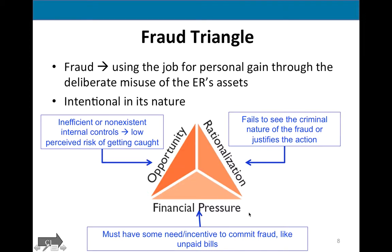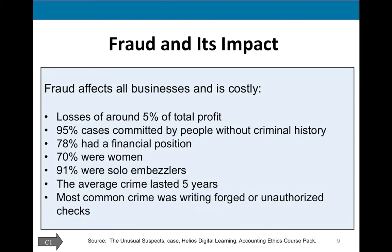An employee might also experience financial pressure — not in all cases but in most — meaning some kind of need or incentive to commit fraud, such as unpaid medical bills, divorce, a high mortgage, or drug and alcohol abuse. The third component is rationalization: the employee does not see the criminal nature of their actions, or in their mind they are justifying and explaining them without seeing the severity. Data from a case published by Helios Digital Learning notes that fraud affects all businesses, and businesses lose about 5% of total profit — which is a huge amount.